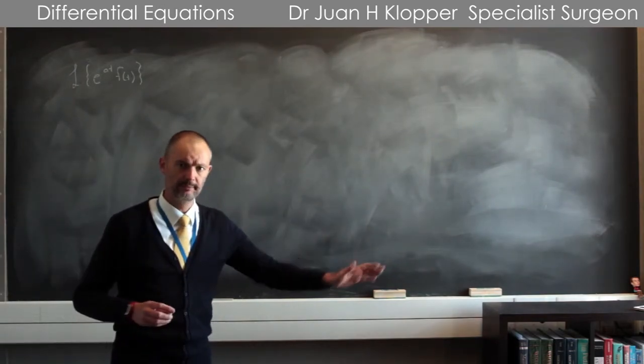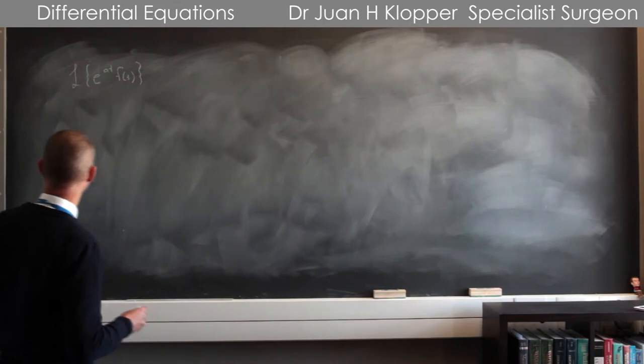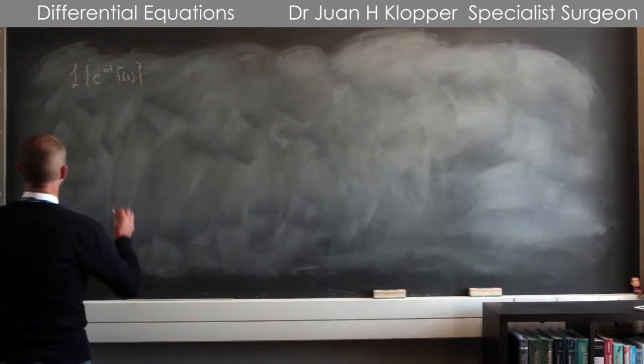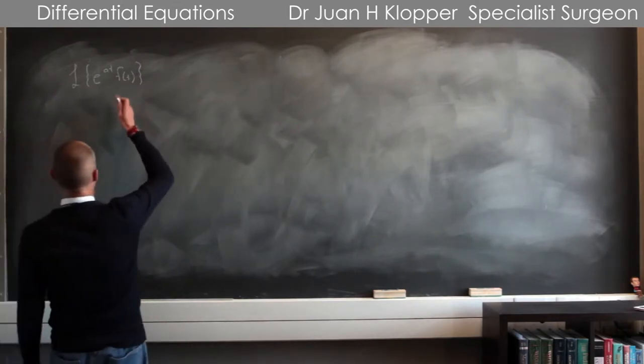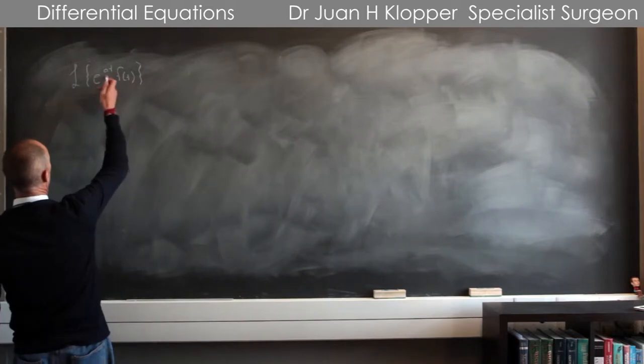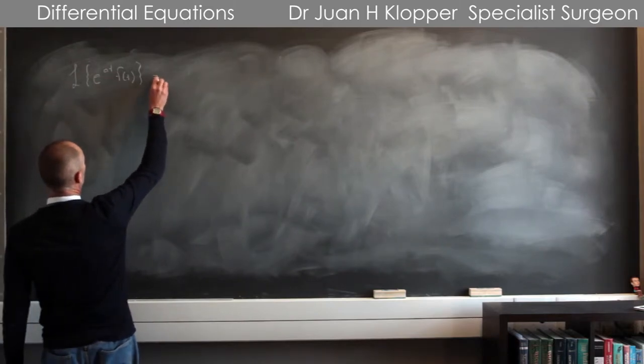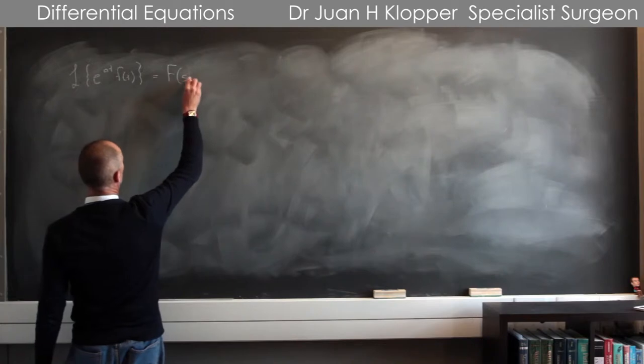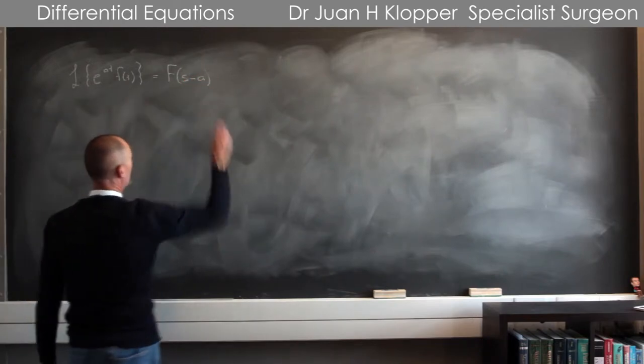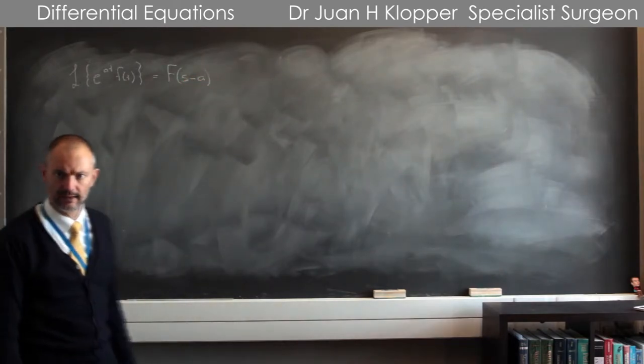It can become very onerous to do these Laplace transforms. There's a simple way though, and if you multiply f(t) by e to the power at, that becomes the f of, not s, but s minus a. It's as simple as that.